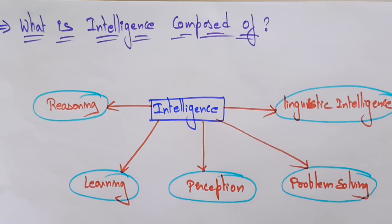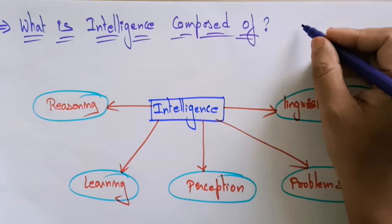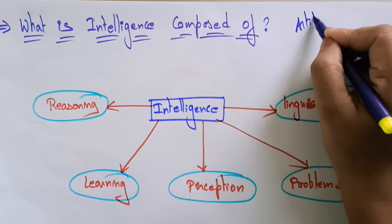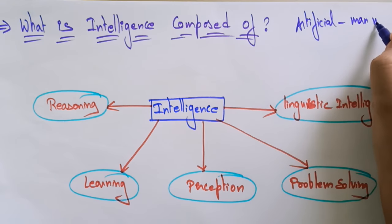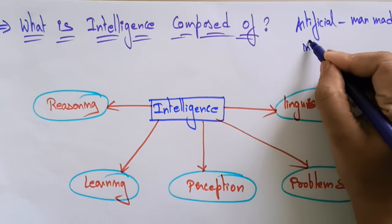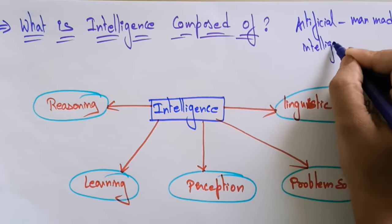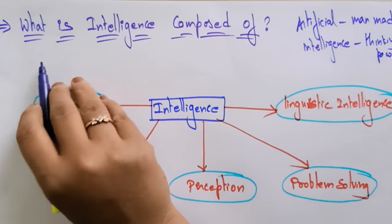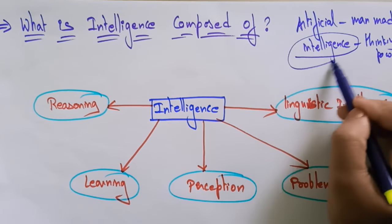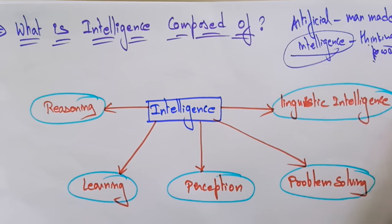Hi students, welcome back. Now coming to the next topic in the subject Artificial Intelligence: what is intelligence composed of? So far you have seen that artificial intelligence is a man-made thinking power. We know that is a definition of artificial intelligence.